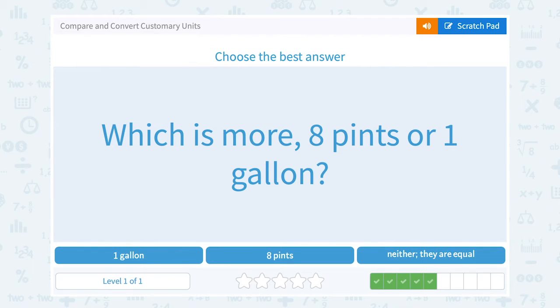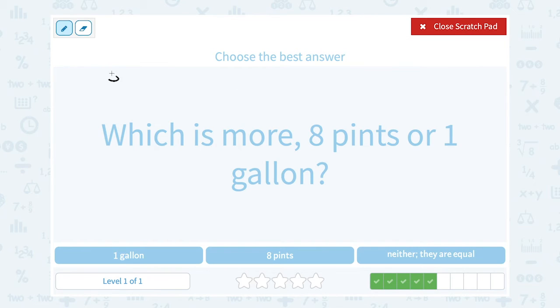This time they ask us, which is more, 8 pints or 1 gallon? So we need to know our conversion here, and 8 pints is equal to 1 gallon. If you've done any converting back and forth, 8 pints equals 1 gallon. So which is bigger? Neither. They are the same thing, just measured two different ways.